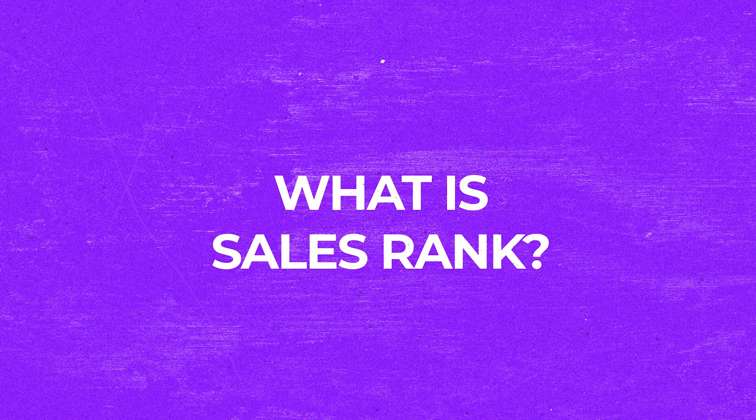You might be asking: what is sales rank? Quite simply, Amazon ranks all the products it has in each category based on how they're performing — number one, number two, number three in that category. If it's product number one, it's going to be the number one best-selling product; number two will be the second best-selling product, and so on. The closer a product is to rank number one in a category, the better it's selling.